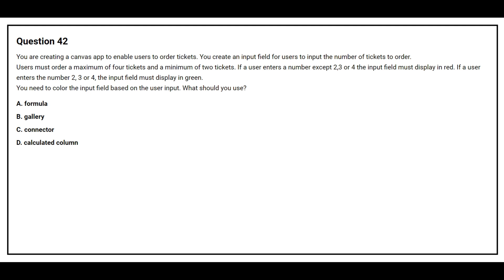Question 42: You are creating a canvas app to enable users to order tickets. You create an input field for users to input the number of tickets to order. Users must order a maximum of four tickets and a minimum of two tickets. If a user enters a number other than two, three, or four, the input field must display in red. If a user enters two, three, or four, the input field must display in green. You need to color the input field based on user input. Option A: formula. Option B: gallery. Option C: connector. Option D: calculated column. The correct answer is Option A: formula.